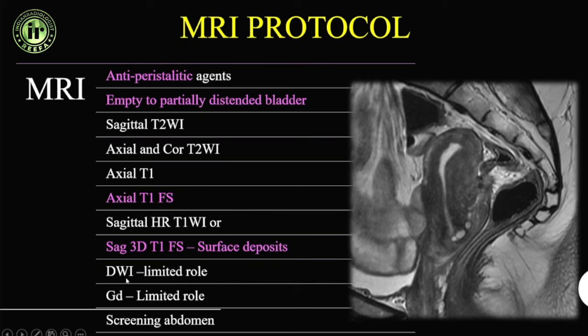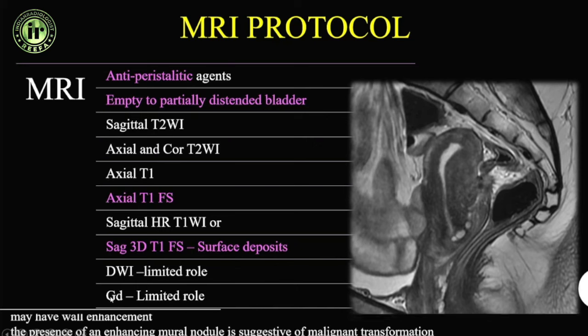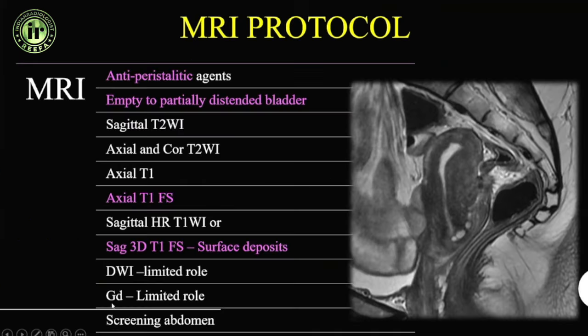Diffusion has a limited role in endometriosis per se, though it can be performed. Contrast also has a limited role. Screening the abdomen is done to know the extent of disease.